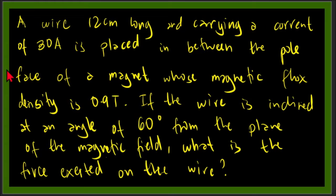The magnetic flux density is 0.9 tesla. If the wire is inclined at an angle of 60 degrees from the plane of the magnetic field, what is the force exerted on the wire?